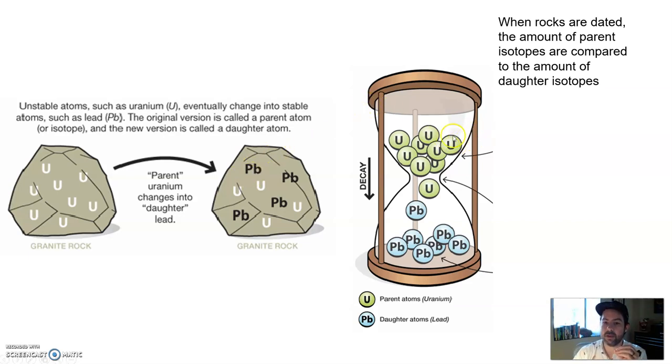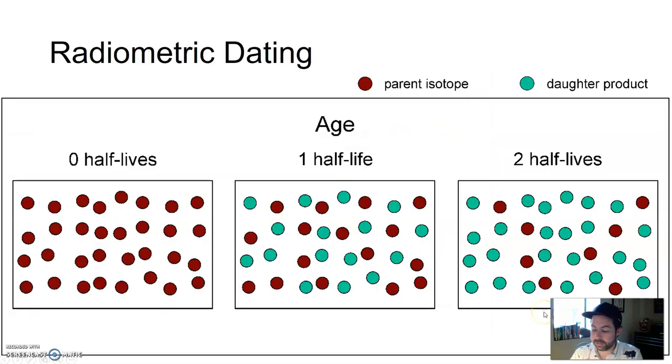When rocks are dated, the amount of parent atoms is compared to the amount of daughter isotopes. We have the uranium, the parents. They decay, change, and become daughter products, daughter atoms, in this case, lead. And this involves something called measuring half-life.